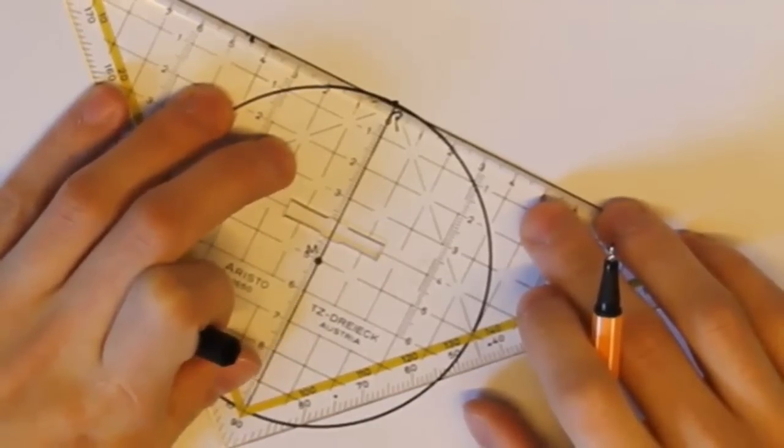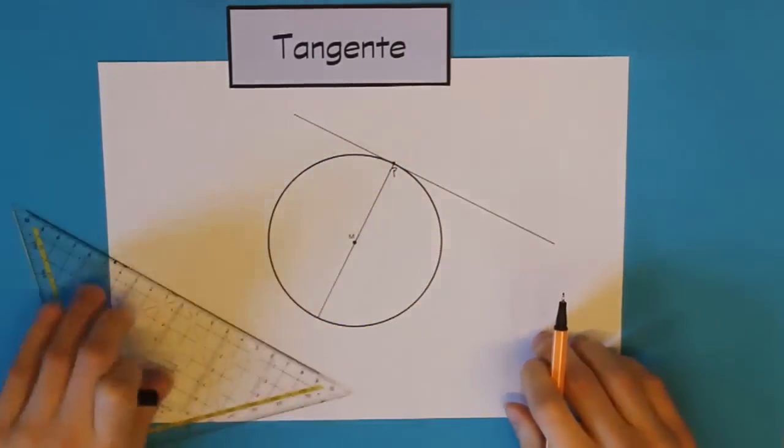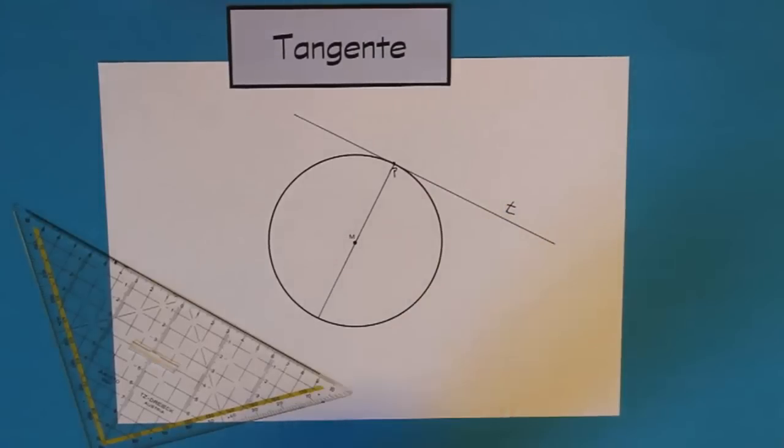Genau so. Schön schauen, dass der rechte Winkel passt hier. Und dann zeichnen wir die Tangente. Und diese beschriften wir jetzt ja noch mit einem kleinen, harten T, quasi wie Tangente. Und damit sind wir jetzt auch schon fertig.